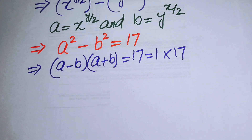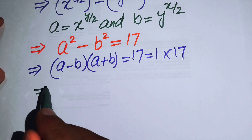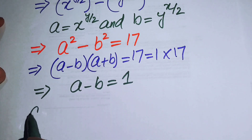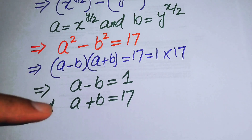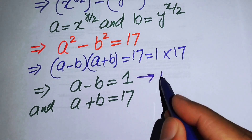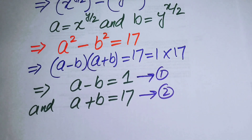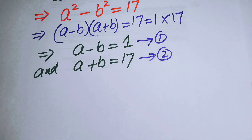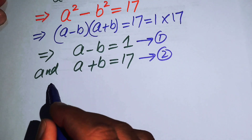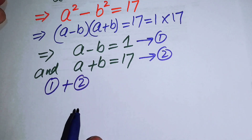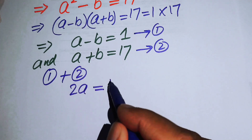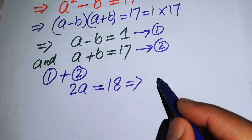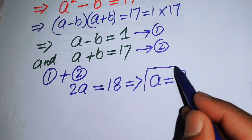Comparing both sides, we equate a minus b equals 1 (equation 1) and a plus b equals 17 (equation 2). Adding equation 1 and equation 2, the b terms cancel and we get 2a equals 1 plus 17 equals 18, giving a equals 9.